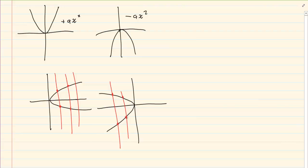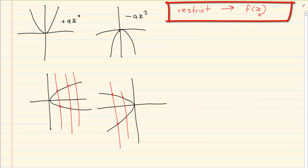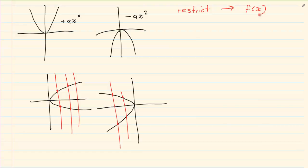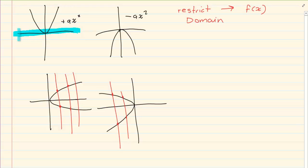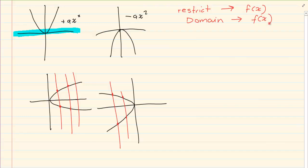So what we need to do is restrict. Restrict means that we will only draw a part of the graph. When we do this, what we need to remember is that we are going to restrict the domain — we are going to limit the domain. Remember from your previous work, domain refers to the x-axis. When we say we are restricting the domain, we are talking about f(x), not the inverse graph.